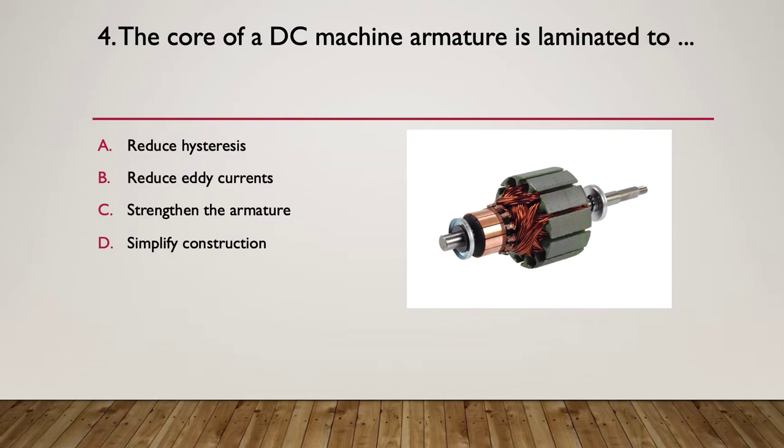Question 4. The core of a DC machine armature is laminated to: A, Reduce hysteresis. B, Reduce eddy currents. C, Strengthen the armature. D, Simplify construction. So why do we laminate the armature?